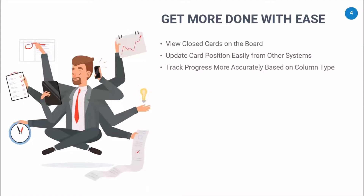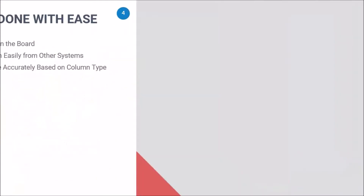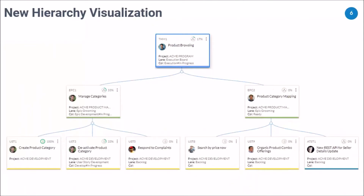Let me first set the context. While we have delivered the agile program dashboard in this version, I'd like to quickly go over the agile program management capabilities released in the past three or four versions. The new hierarchy visualization has allowed you to build a theme, epic, and user story hierarchy inside a project — and across projects. You could have themes inside a program, epics inside a product management project, and user stories or technical stories inside a separate development project, all linked as part of the hierarchy visualization.